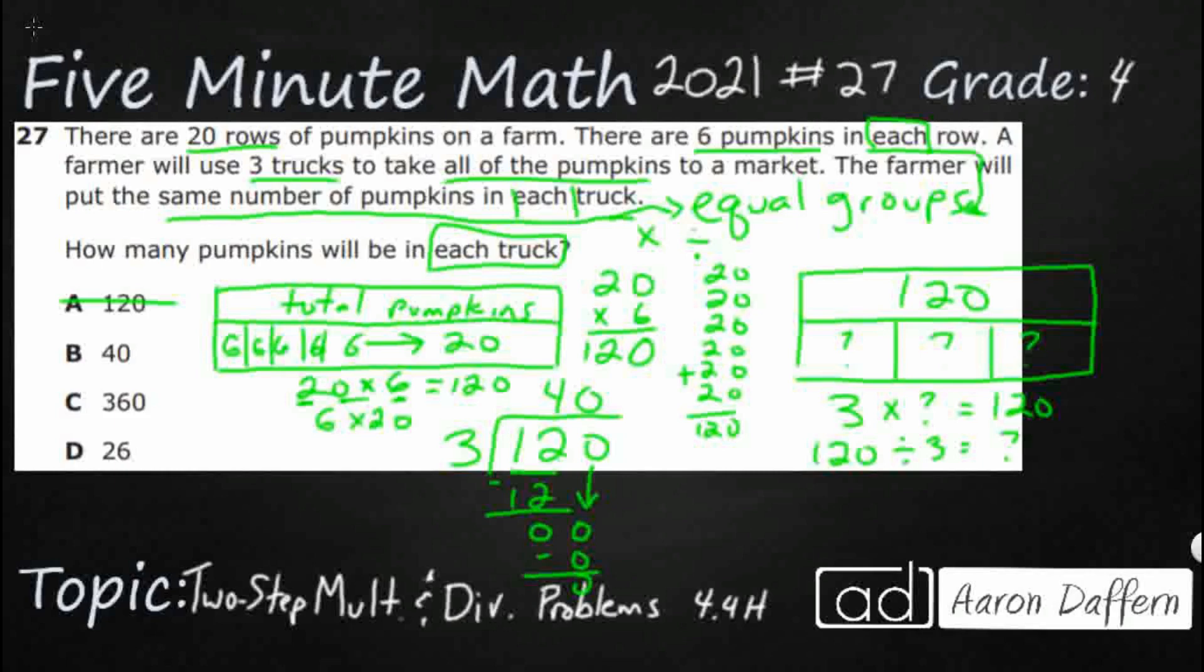We could have figured that out if we would have said three times what makes 120. Well, that's four. And then we would have added that zero. We would have gotten 40. But either way, we're going to put 40 in each of these trucks. And that is going to be our answer, B.